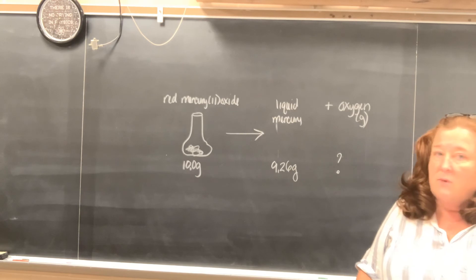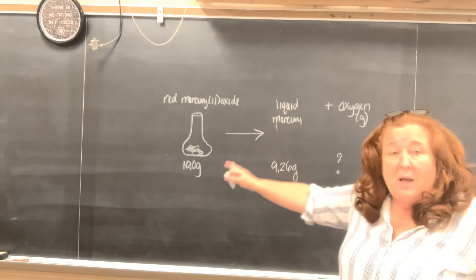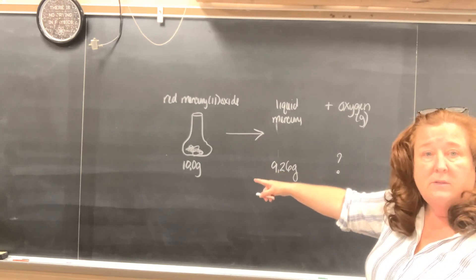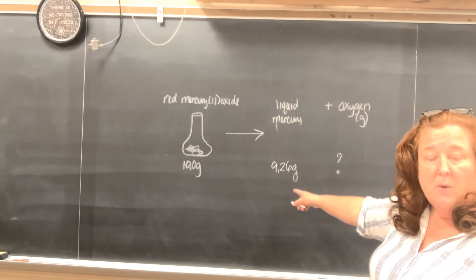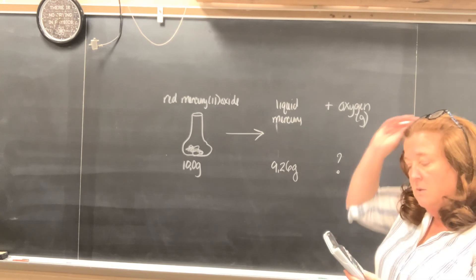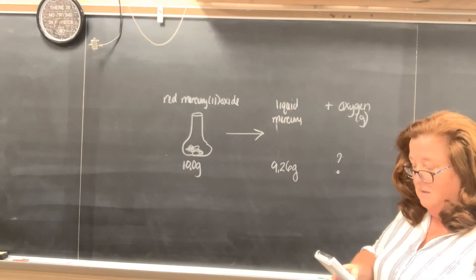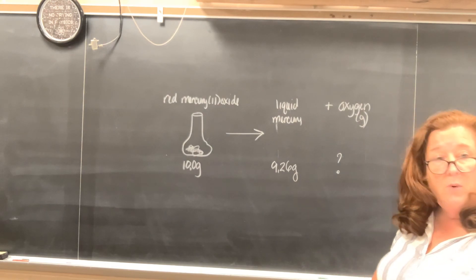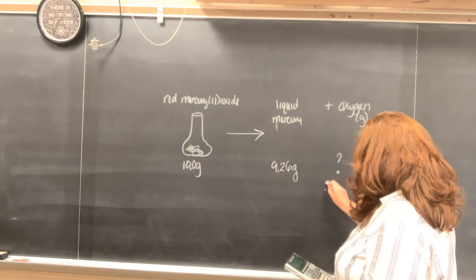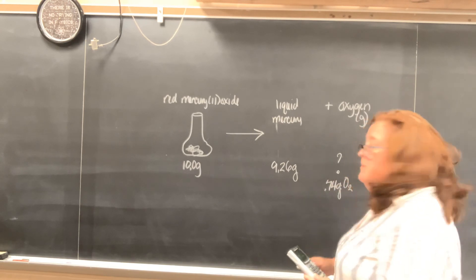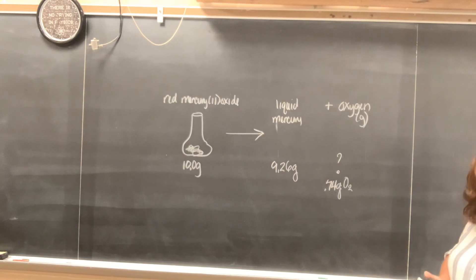According to the law of conservation of mass, whatever you start out with has to equal whatever you end up with. We know what the total was, and we know how much of the liquid mercury was left. So the missing part has to be the oxygen. We simply take 10 minus 9.26, and we get 0.74. So there's 0.74 grams of oxygen gas.